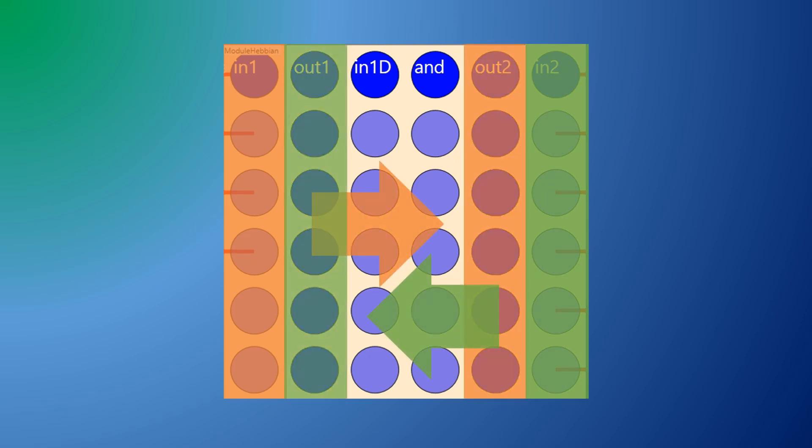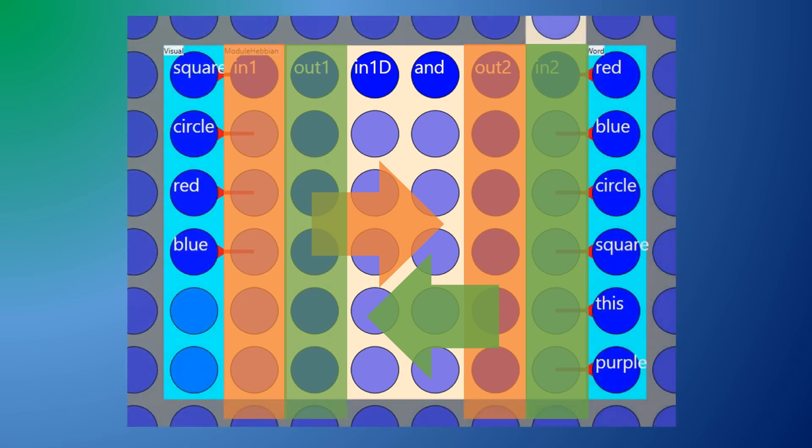Let's assume that on the left side we have visual inputs and on the right words. I've added some columns and put some labels on the outside neurons to give some possible context but of course these are just arbitrary bits so they could represent anything.